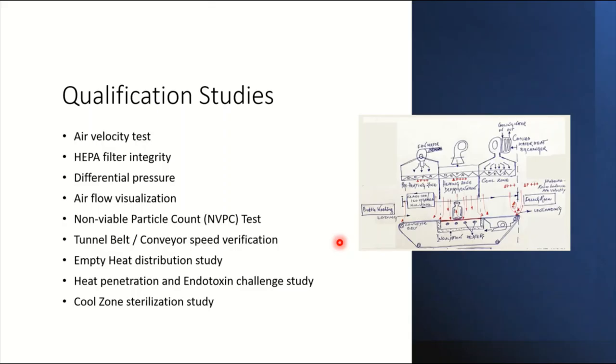We will not talk too much on this slide as we have detailed description in the upcoming slides. Just running through the tests: air velocity, HEPA filter integrity, differential pressures within the room and zones, airflow visualization studies—normally recommended, a few years back people were not doing this. Non-viable particle count, yes we are claiming ISO 5, so we should prove that the area is getting passed and fulfilling the requirements of ISO 5.